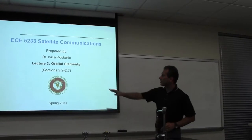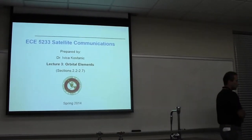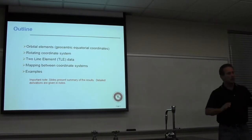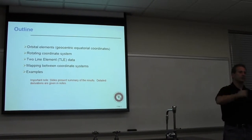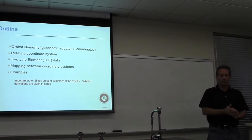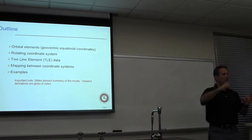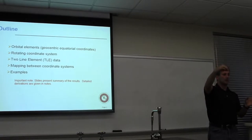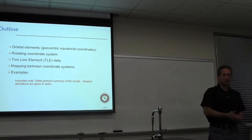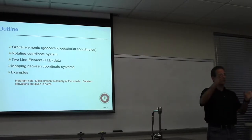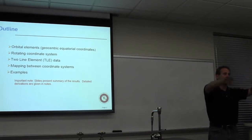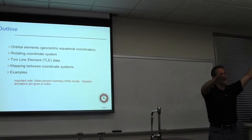We're going to continue where we left off last time, now sections 2 to 7 in your textbook. Last time I showed you how you can locate a satellite within an orbit. We saw that the solution of the differential equation describing satellite motion is an elliptical orbit. If you know the satellite position at one time, you can determine its position in the coordinate system where the XY plane is the same as the orbital plane and the Z axis comes out of the orbit.